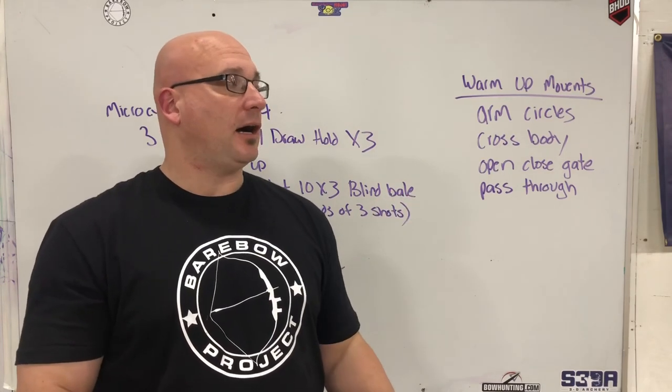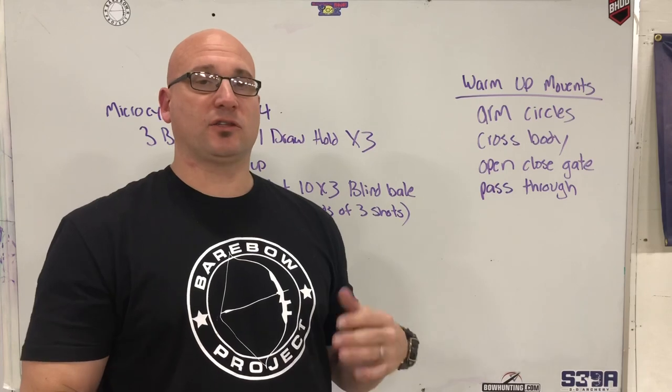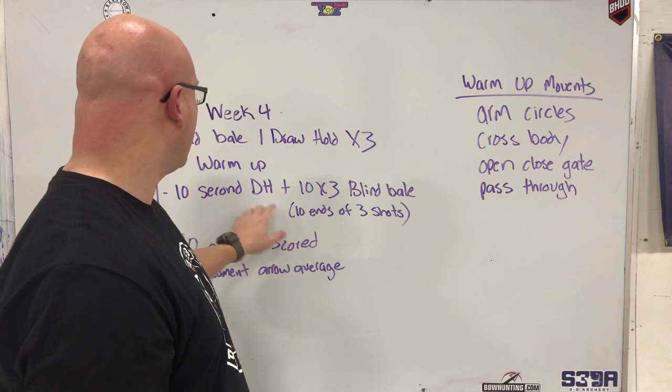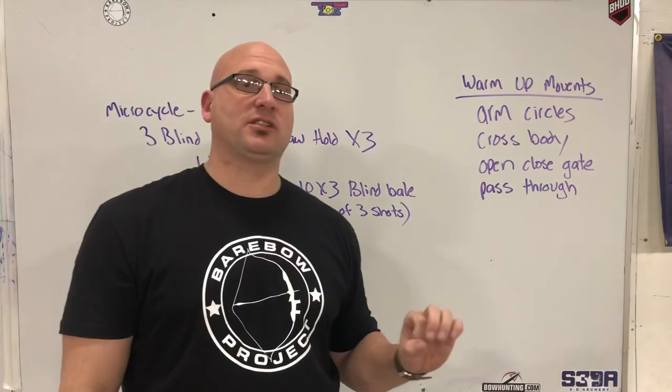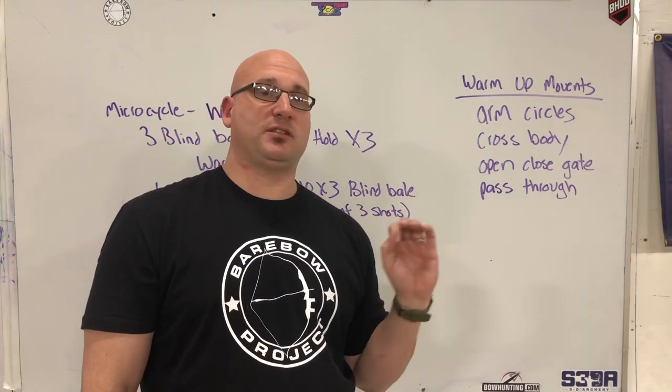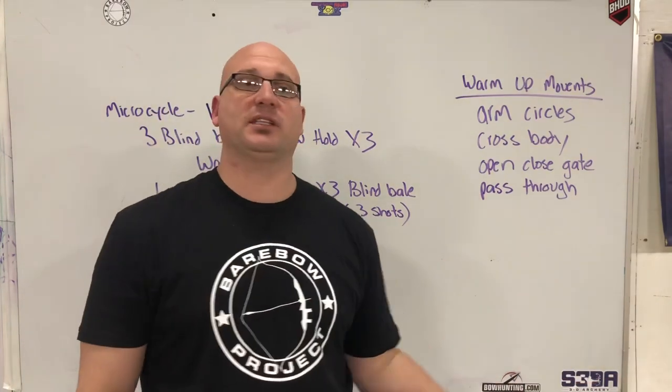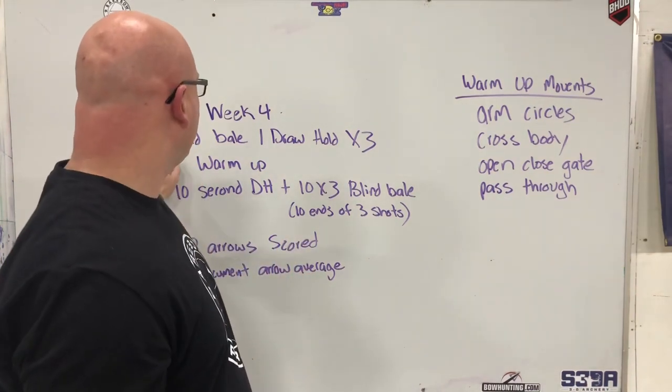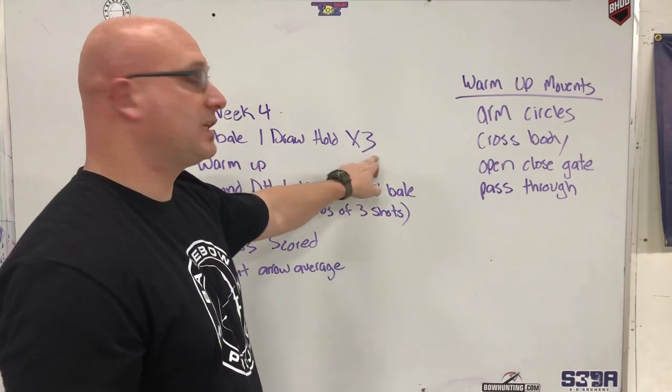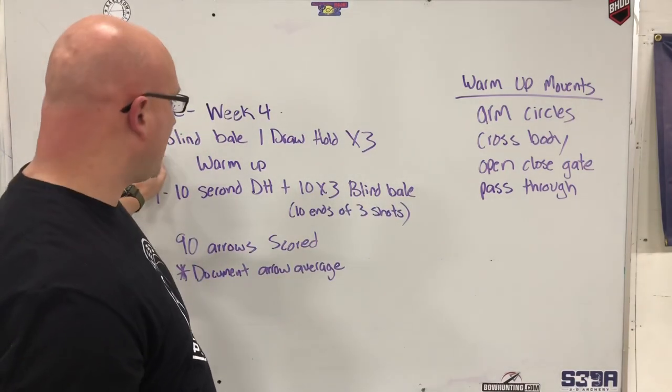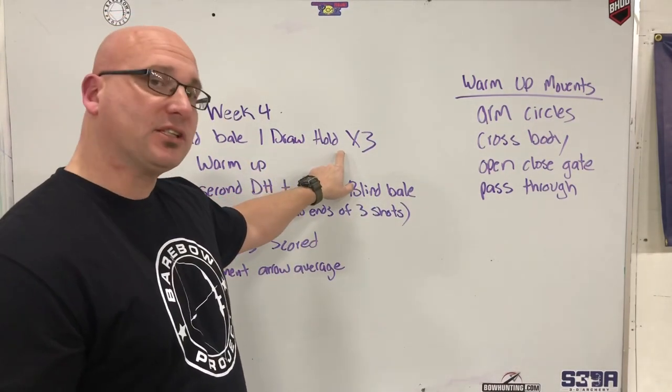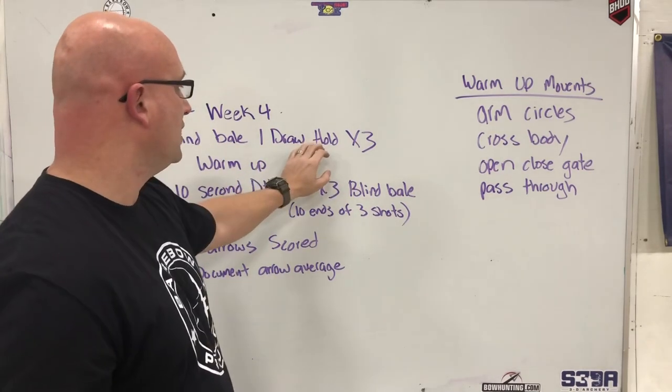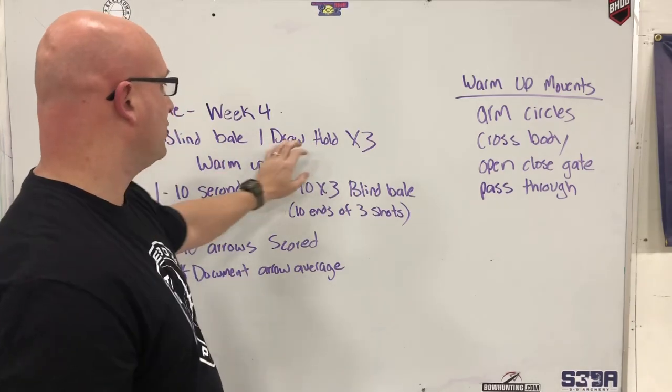With that being said, the draw holds are super important and you're going to see them in different increments. You will see, as you see down here, DH is going to be your abbreviation for draw hold. You'll see it throughout the programming every single day, if not every week at a minimum every week. So you're going to do three blind bail, one draw hold times three. So that's going to be a total of nine shots with one draw hold every three shots. So you're going to go to your, do your blind bail, then do a draw hold, do your blind bail, do draw hold, blind bail, draw hold. All right, that should make clear enough sense.